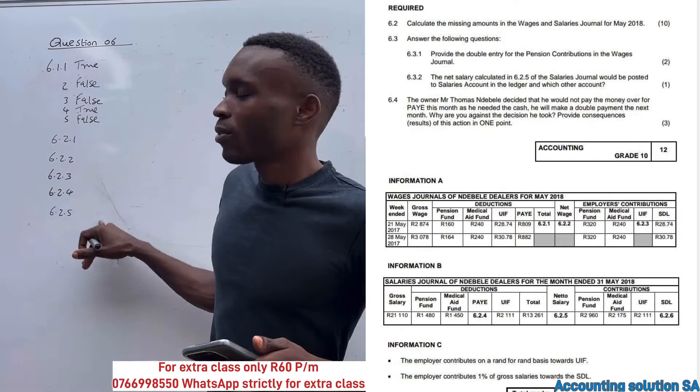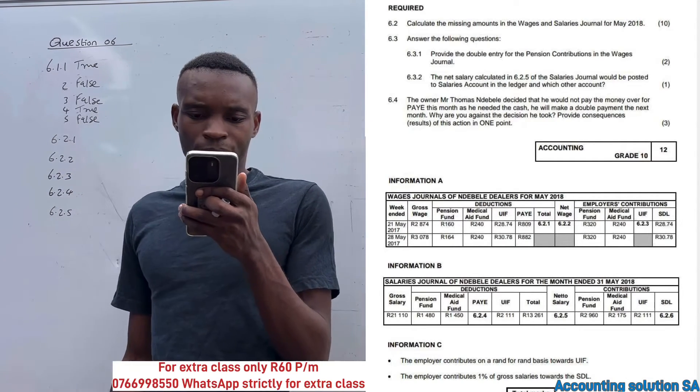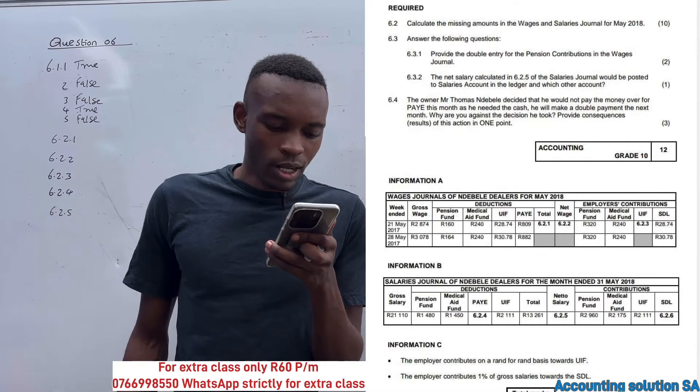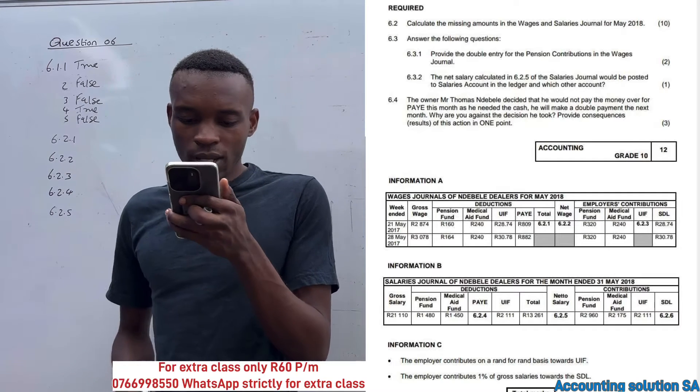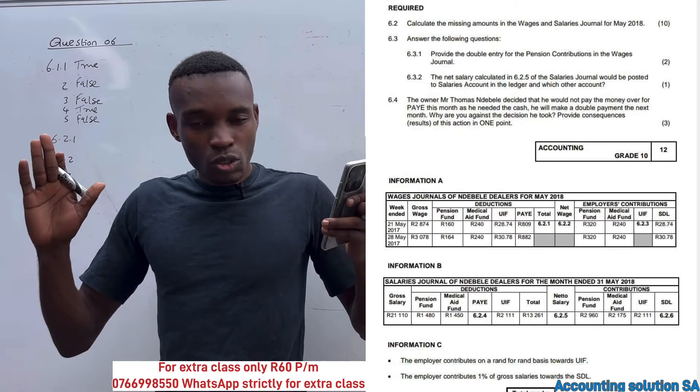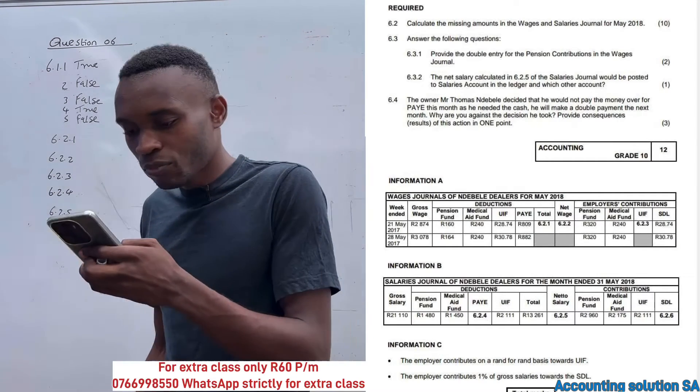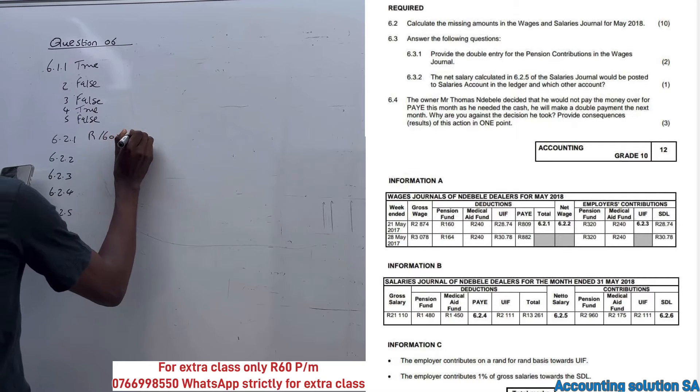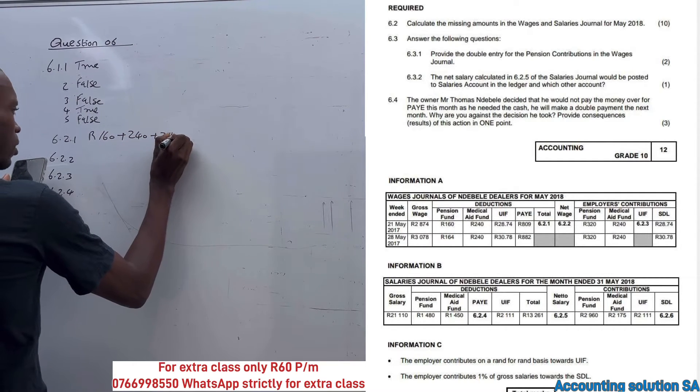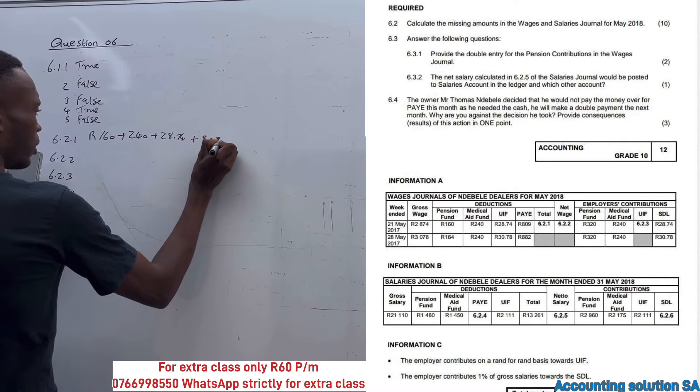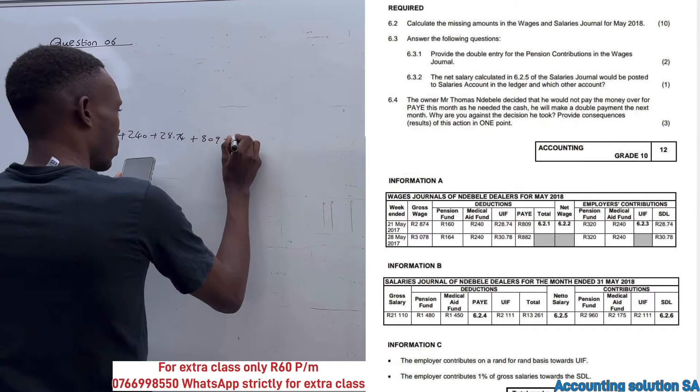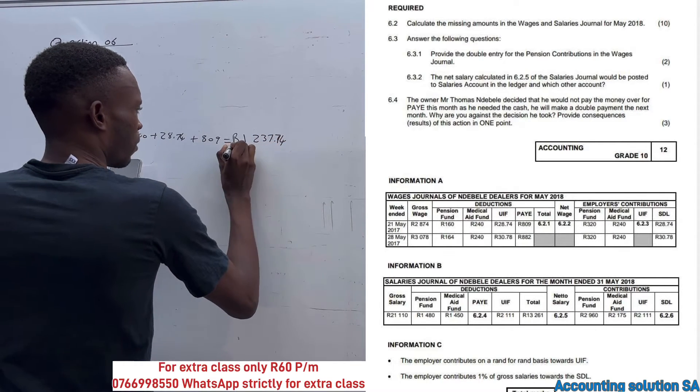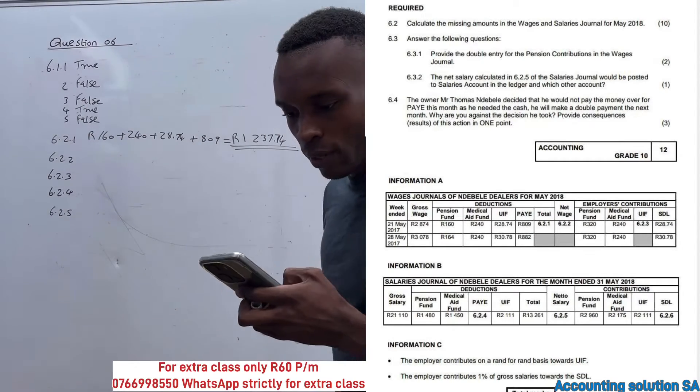Let's look at 6.2.1 - it's total under Information A. They are looking for total deductions. Deductions that we have in this case are pension fund, medical aid, UIF and PAYE, which means that we must get the total of those four items. We are going to add amounts of 160, 240, 28.74, as well as 809. If you calculate this, you are going to get an amount of 1,237.74. That's the answer for 6.2.1.